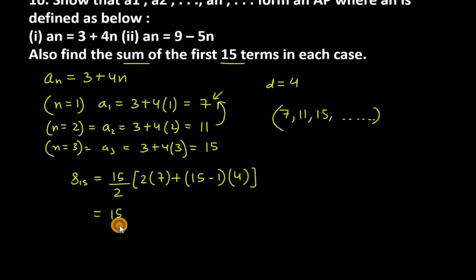So it is 15 over 2, then it is 14, then it is 14 into 4 bracket close. Let's do 14 into 4 and add 14. You get 56 plus 14 is 70, and here we have 15 over 2. So let's cancel 2 with 70, you will get 35. 35 into 15 is 525. So this is your answer for the first part.